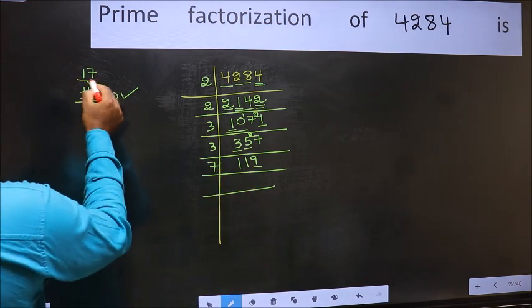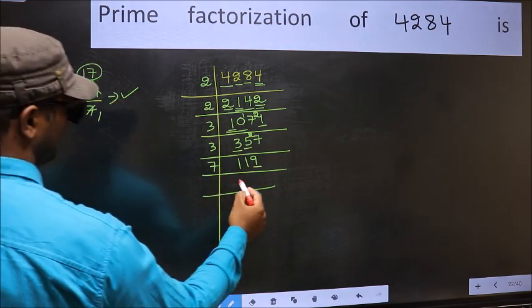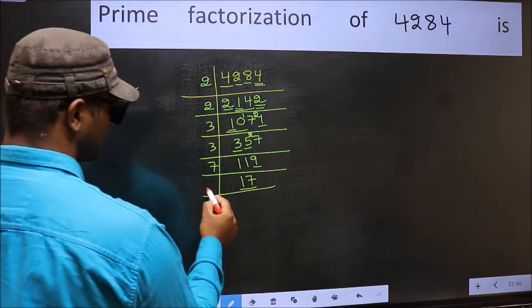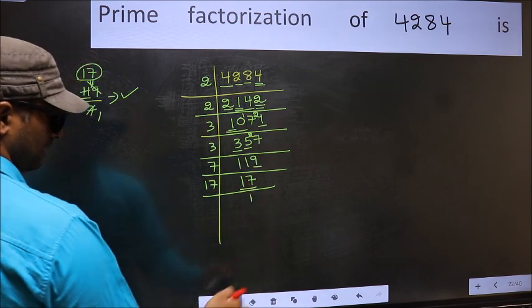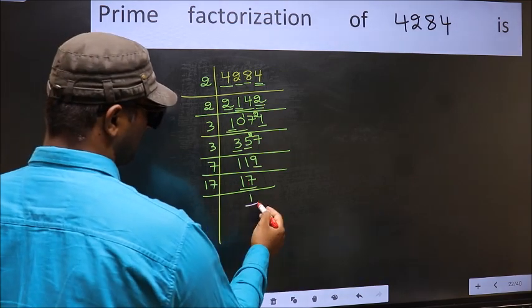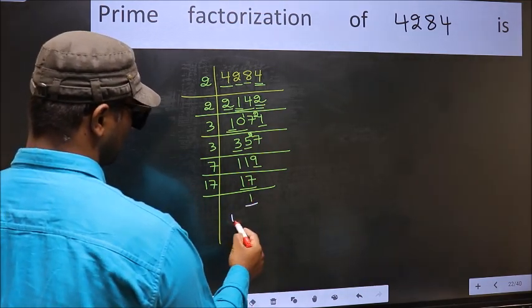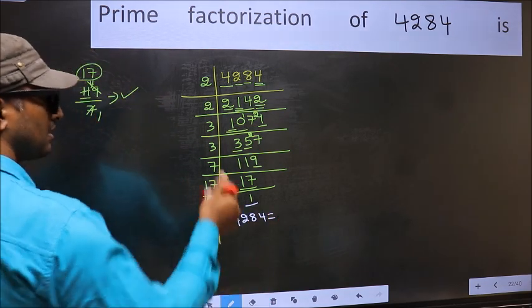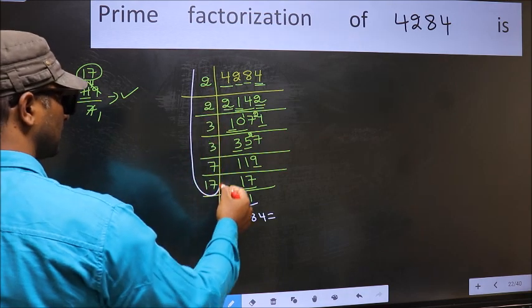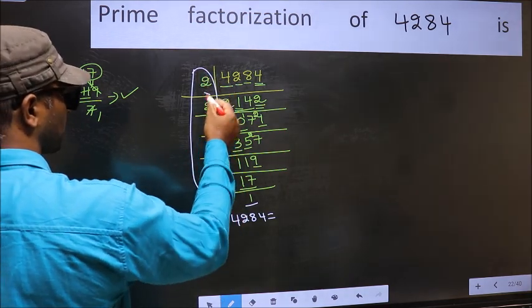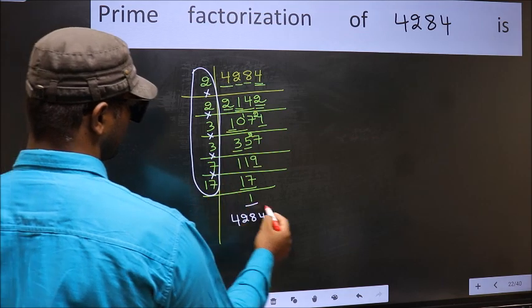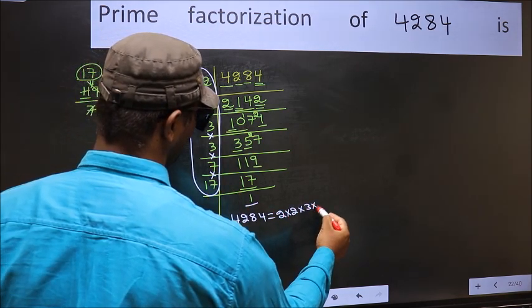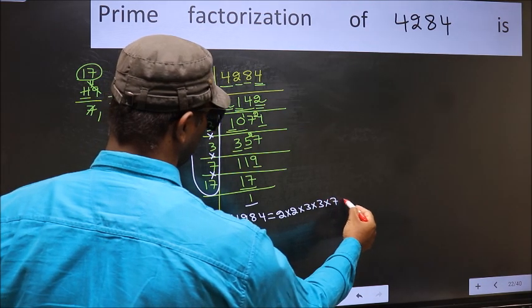And here we should write the number 17. Now we have 17. 17 is a prime number, so 17 once 17. We got 1 here. So the prime factorization of 4284 is the product of these numbers: 2 × 2 × 3 × 3 × 3 × 7 × 17.